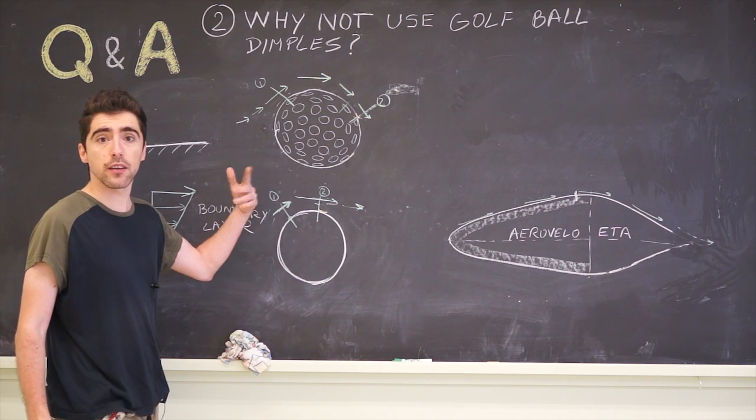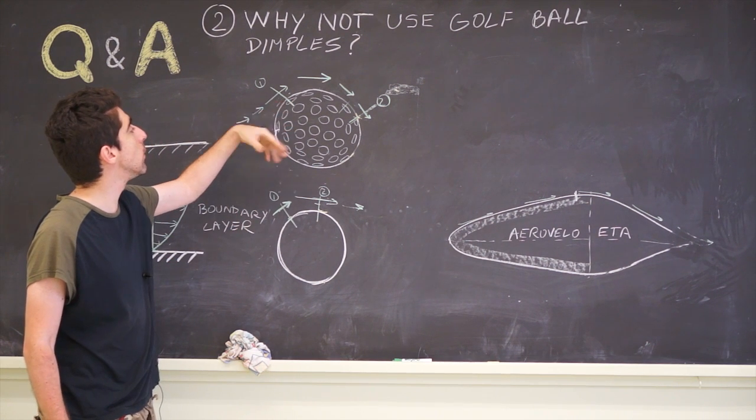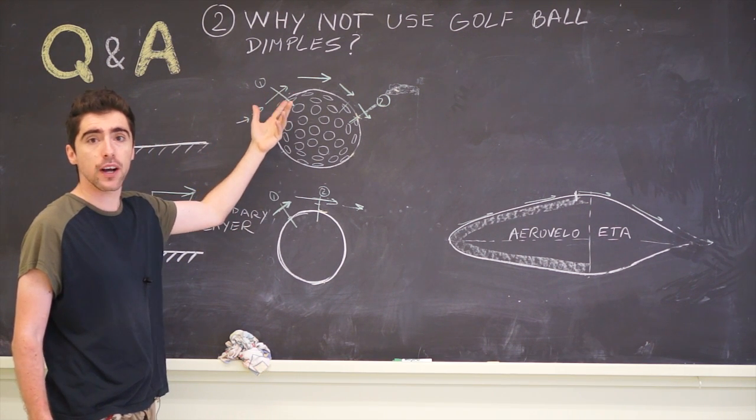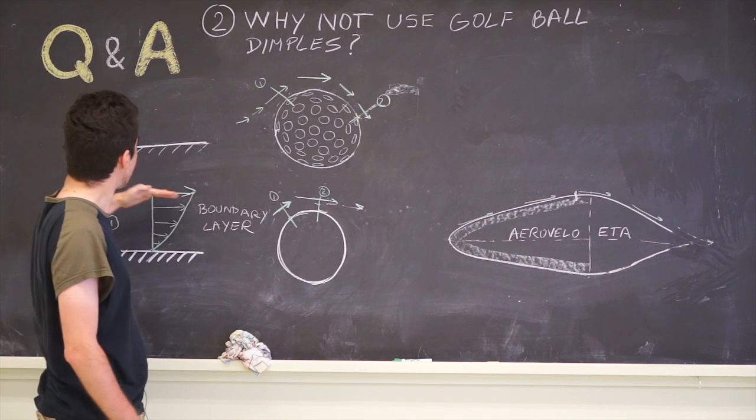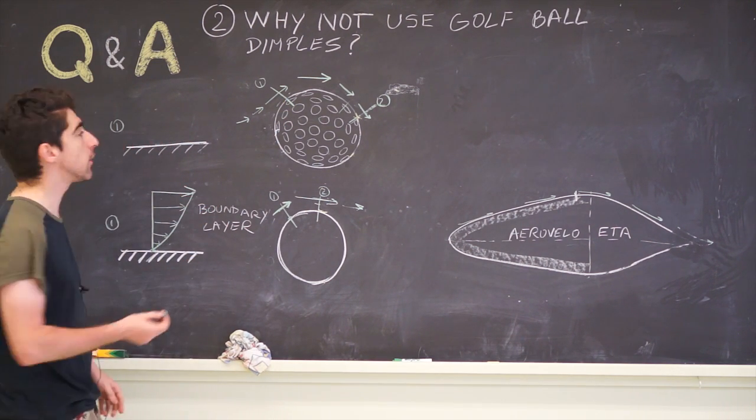For a rough object, we also have a boundary layer. But because we have dimples or any other obstructions, they cause the air streams to start mixing.